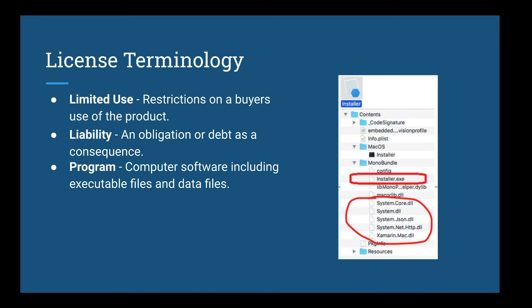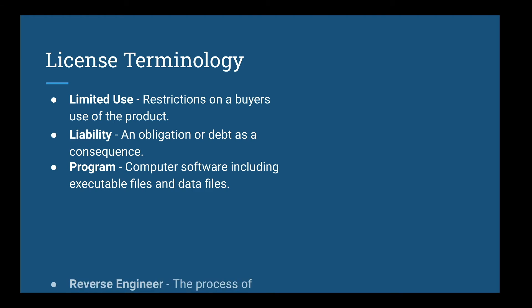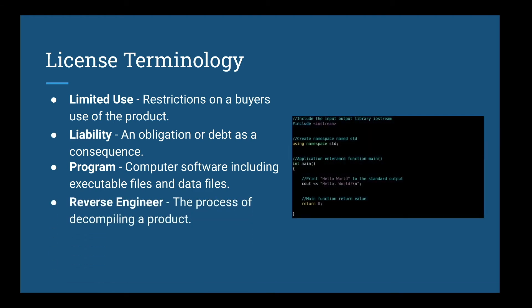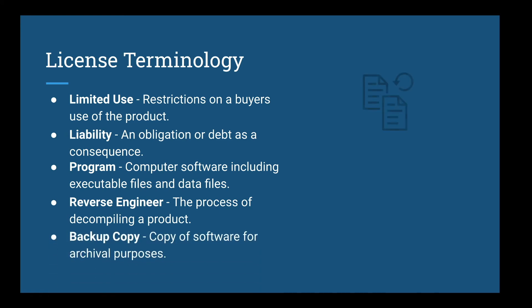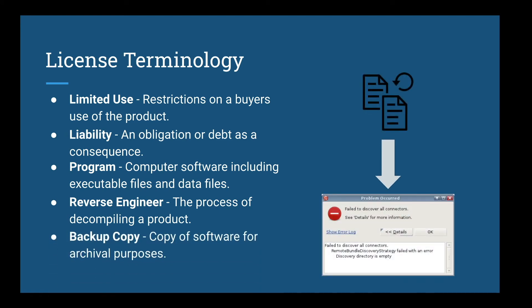A program is computer software that includes executable files and data files. This does not necessarily include media. Reverse engineering is the process of decompiling a product. However, many license agreements do not allow users to do this and protect the intellectual property rights of the developer. A backup copy is a copy of software for archival purposes. This should only be done in the case of when the original product fails, when the license agreement is terminated, or when the software is resold — because then those backup copies must be deleted.